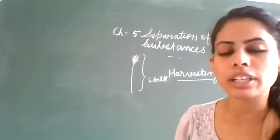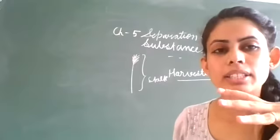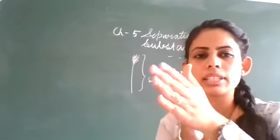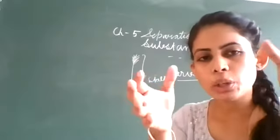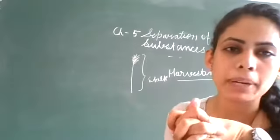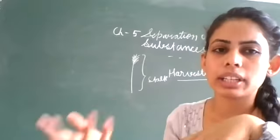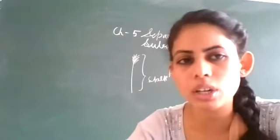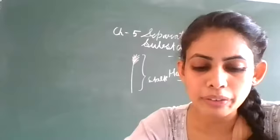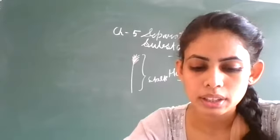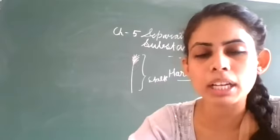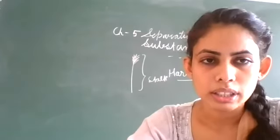Another example: milk or curd is churned to separate butter. Churning means shaking — you can see the picture in figure 5.2. There is a rope, and you push and pull it. In this way, from the curd or milk, you get butter. Machines are also available for this now.